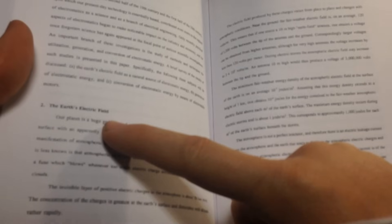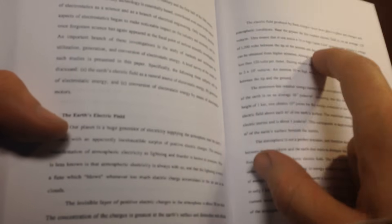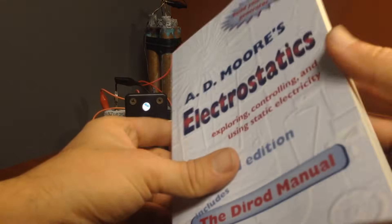I'll just share a couple of things here from the very back. He has a section on the earth's electric field, and he says here the near ground or fair weather electric field is on average 120 volts per meter. This means that if one erects a 10 meter high earth field antenna, one attains a voltage of 1200 volts between the tip of the antenna and the ground. Very fascinating stuff. So that's the first book.